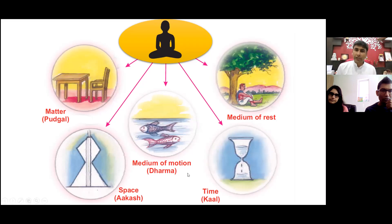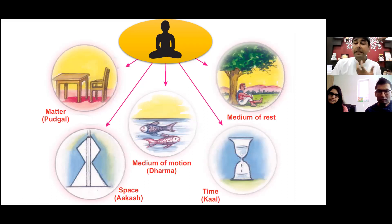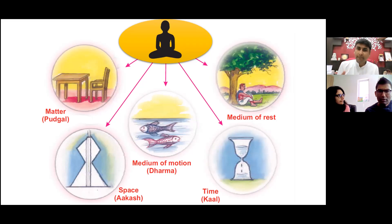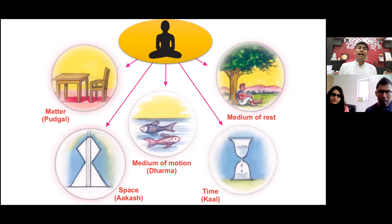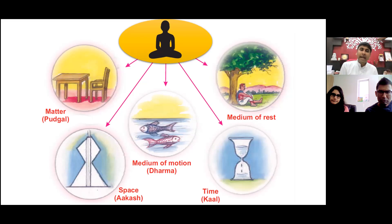We are all constantly changing, constantly evolving. This is because of time — because of Kaldravya. So Kaldravya's special attribute is Parinamalhetutva. Dharmadravya's special attribute is Gakihetutva. Adharmadravya's special attribute is Sthitihetutva. These are the names introduced in the last class. Akash is the space in which we all dwell together. Because of our Pradeshatvaguna, we have our own space, but together we all live, and that common space is provided by Akashdravya.